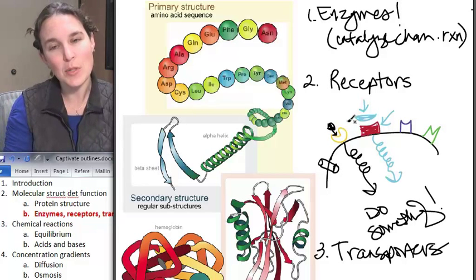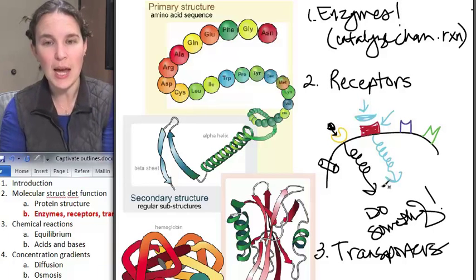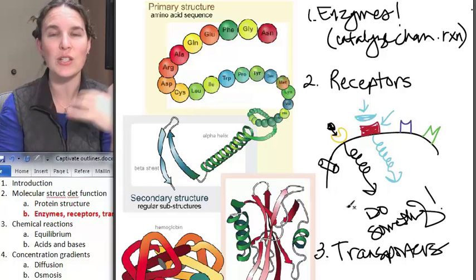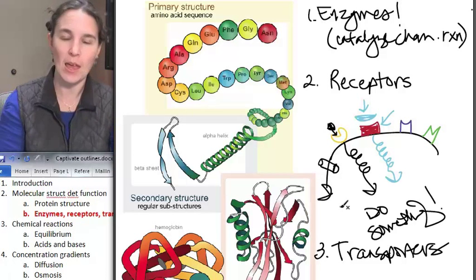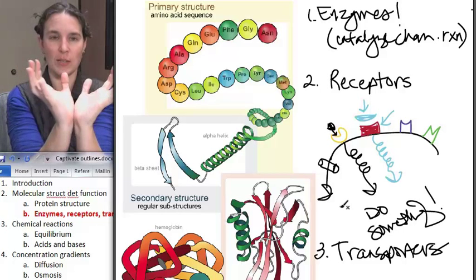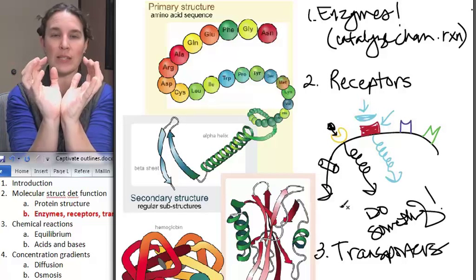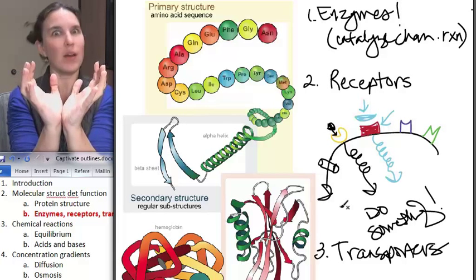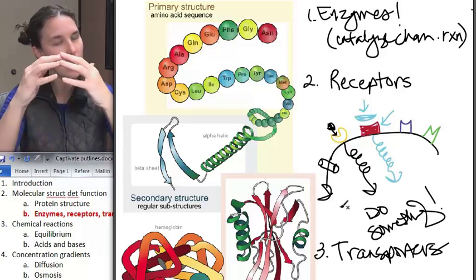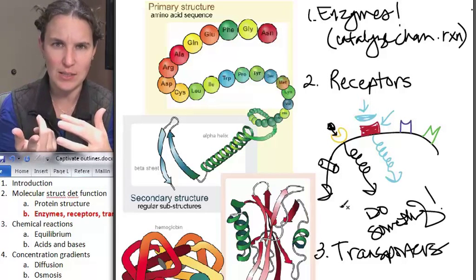A receptor binds to a molecule and then causes something to happen. A transporter will actually bring molecules in. I often make my transporters look something like this, and then you can imagine that there's this little transporter sitting in your cell membrane, and when the molecule that it's going to move comes in there, it can actually change its shape because it's a protein. And then the shape changed, and the molecule is now inside the cell.